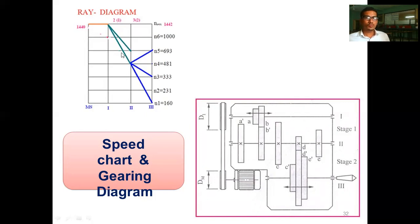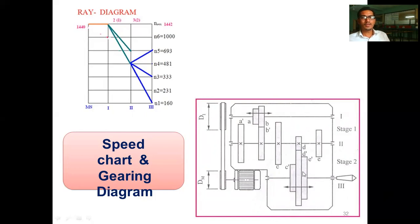The number of gears mounted on the input shaft equals p1, which is two. By engaging gear pairs a-a', b-b', and d-d', we get two speed ratios from the first stage. For the second stage, three gears are located on the output shaft, equal to p2. The number of gears on the intermediate shaft equals the sum of p1 and p2. This completes the kinematic design of the six-speed machine tool gearbox.